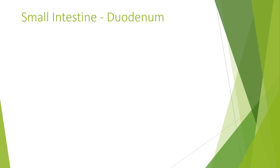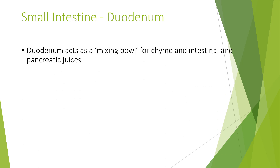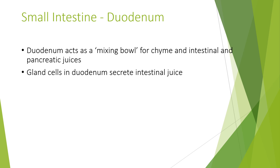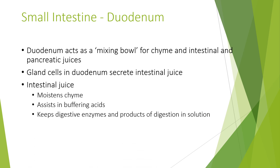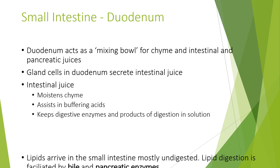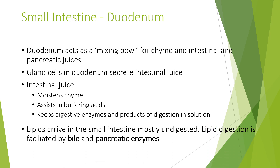Looking at the duodenum in more detail, it acts as a mixing bowl for chyme and intestinal and pancreatic juices. The gland cells in the duodenum secrete intestinal juice, which moistens the chyme, assists in buffering acids, and keeps digestive enzymes and products of digestion in solution. Lipids arrive at the small intestine mostly undigested, and lipid digestion is facilitated by bile and pancreatic enzymes.